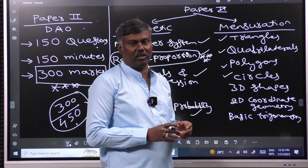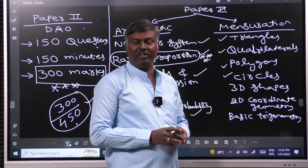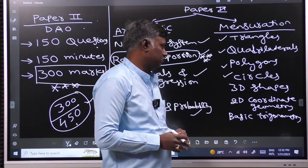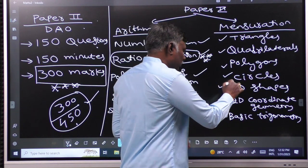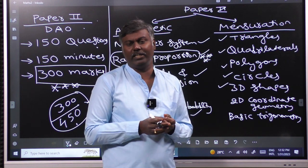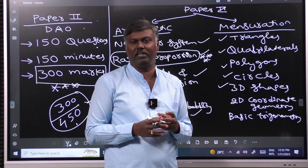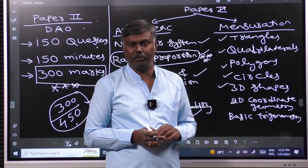These are circles. Basic circles, properties, area, we will discuss. Now there are 3D shapes. You have a cone or a sphere. Prism, pyramid. So these are 3D shapes.